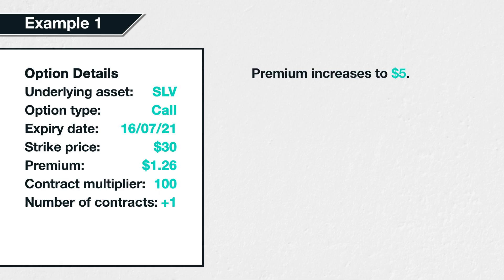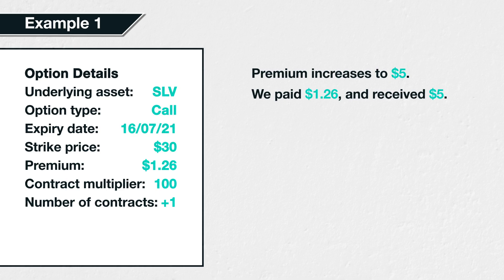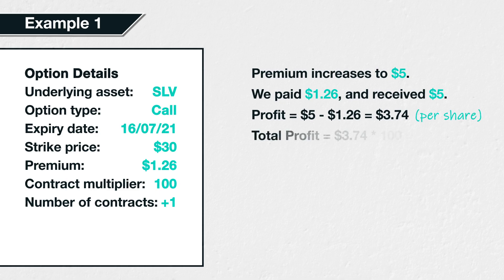It's worth mentioning that we're not going into the specifics of option pricing today and why this option might be worth $5 — that will be covered in detail in sections 7 and 8 later in the course. So we've purchased this SLV $30 call option for $1.26, and a few days later it has increased in value to $5. We then decide to close the position before expiration by selling it for $5. The profit would then be $5 minus $1.26, which equals $3.74. Remember, though, that the contract multiplier for SLV is 100, so this calculation of $3.74 profit is per share. The total then is $3.74 times 100, which equals $374.